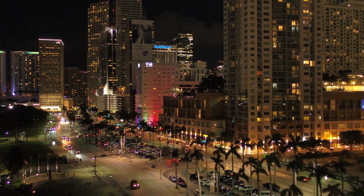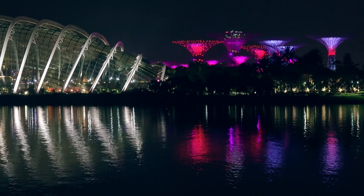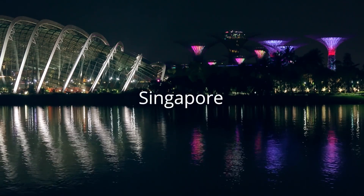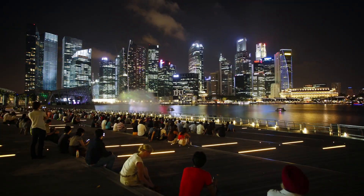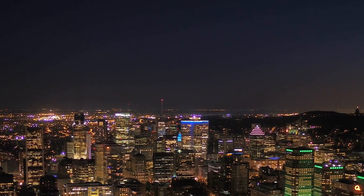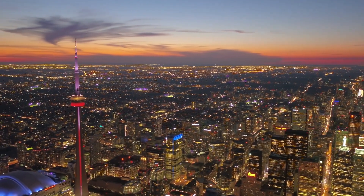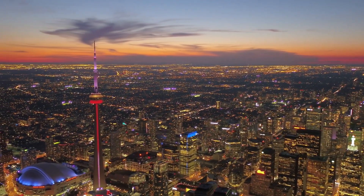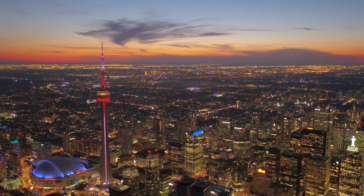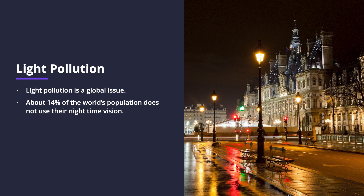Most light pollution is found in urban settings where artificial light sources are numerous. Some of the most light-polluted countries in the world are Singapore, Qatar and Kuwait. In Singapore, the entire population lives under an intense level of artificial nighttime brightness. In large Canadian cities, more than 95% of the stars that can normally be seen with the naked eye are no longer visible. Canada's largest observatory was in Toronto but closed in 2008 because astronomers could no longer see a dark starry sky. Light pollution is a global issue — about 14% of the world's population no longer uses their nighttime vision because the night is so bright.